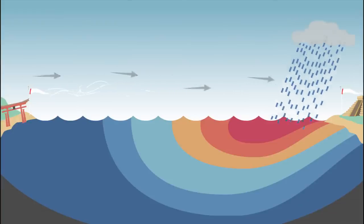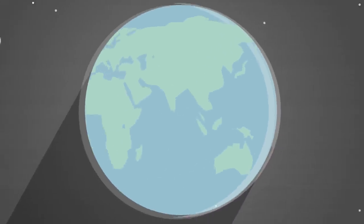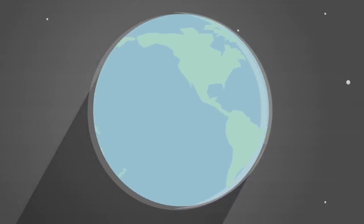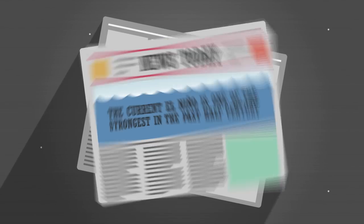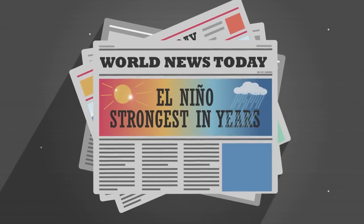This phenomenon affects weather conditions across the equatorial Pacific with potential knock-on effects in other parts of the world. The current El Niño is shaping up as one of the strongest in the past half century.